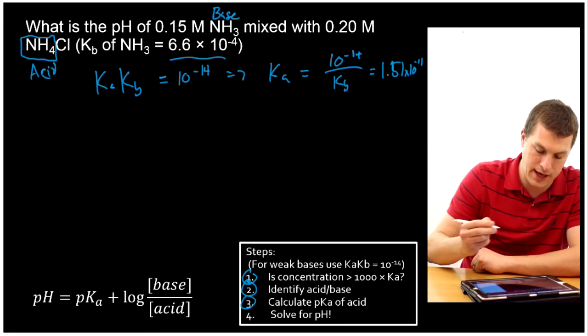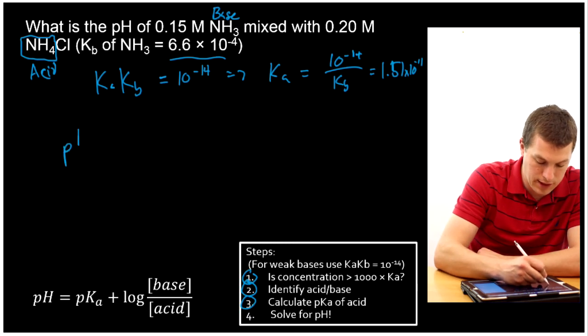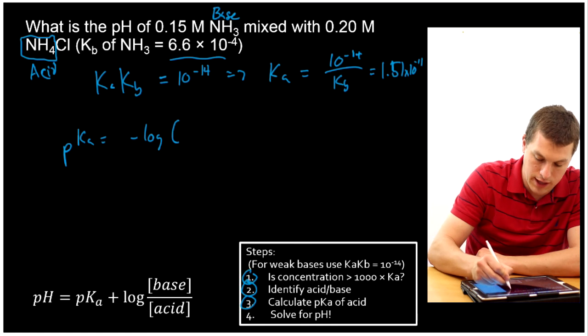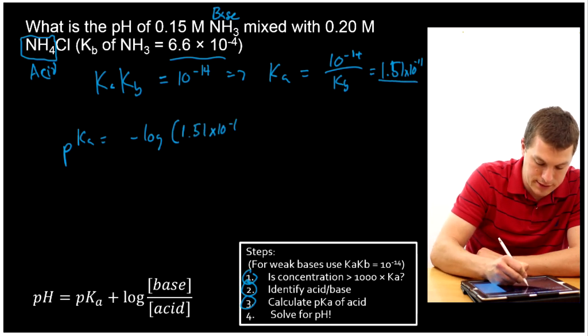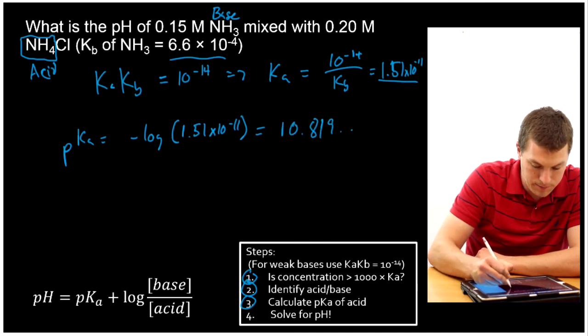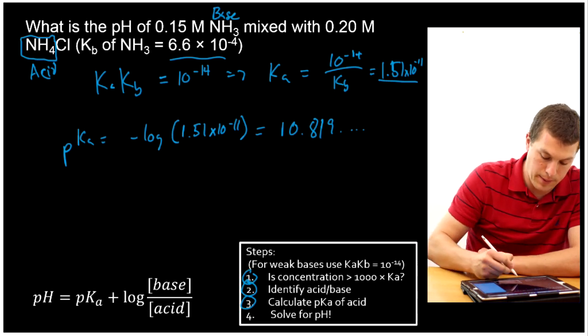And now we want to calculate the pKa of the acid. So pKa is just equal to the negative log of our Ka, which is 1.51 times 10 to the minus 11th. And when we plug that in, we're going to get 10.819. Now I can solve for my pH, last step.